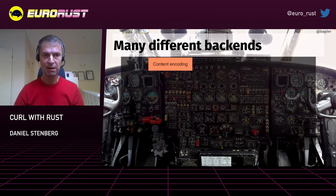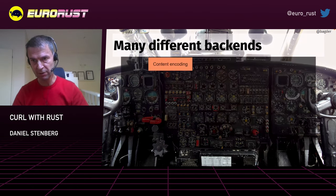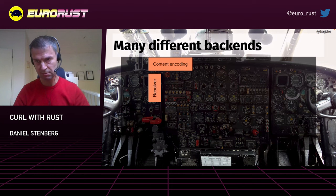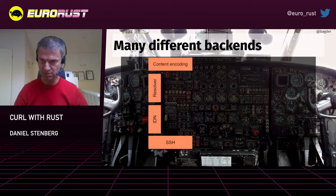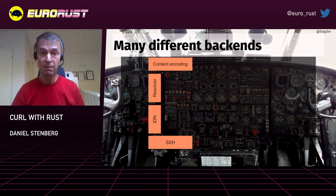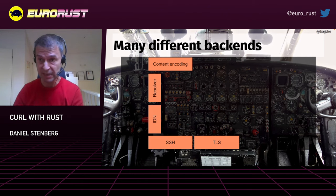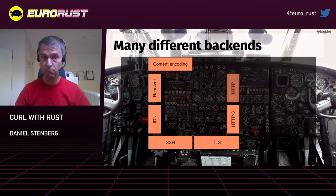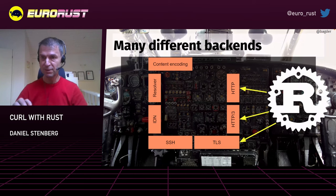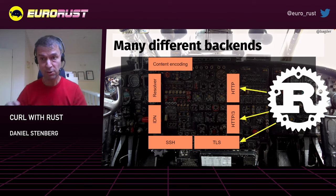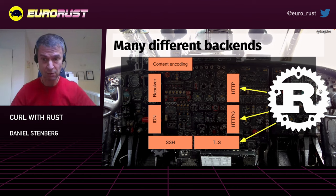For example, we have content encoding backends for HTTP stuff, different resolver solutions, IDN (international domain names) for URLs, SSH backends, TLS backends, HTTP3, and HTTP backends. In some of those, we have Rust solutions — and those are the things I'm going to talk about a little bit more right now.